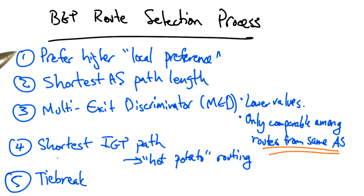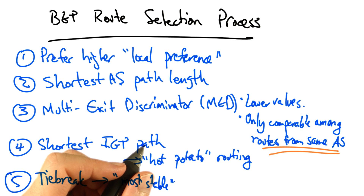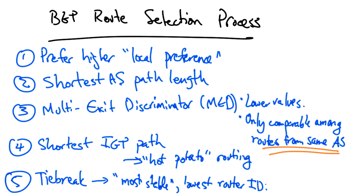Finally, if there are still multiple routes with the highest possible local preference, the shortest AS path, and the shortest IGP path, the router uses a tiebreak to pick a single best route. This tiebreaking step is arbitrary — it might be the most stable route, or the route that's been advertised the longest. But often, to induce determinism, operators typically prefer that this tiebreaking step is performed based on the route advertisement from the router with the lowest router ID, which is typically the neighboring router's IP address.